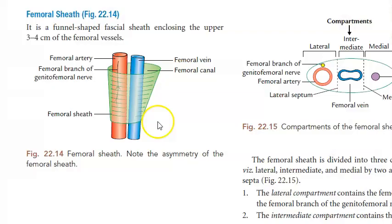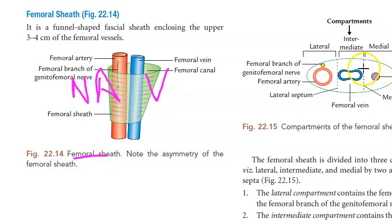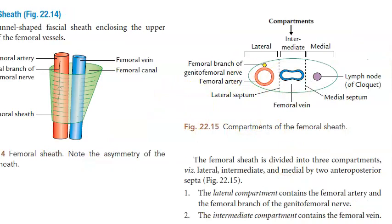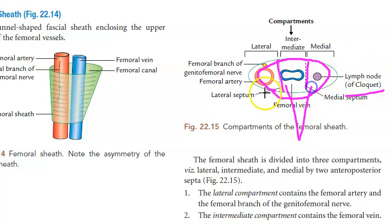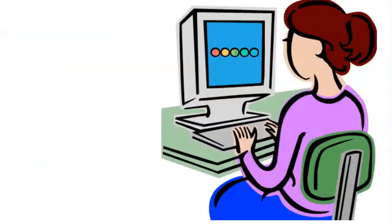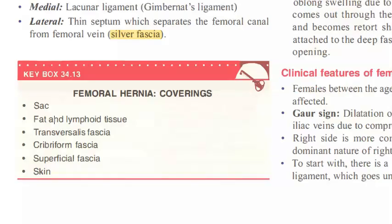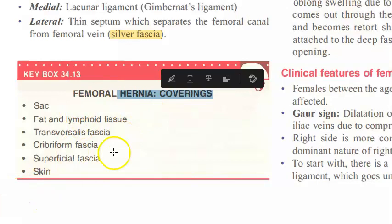The femoral sheath shows the compartments: there is a medial septum and a lateral septum. The sheath contains the femoral artery laterally, the femoral vein, and the lymph node of Cloquet in the femoral canal. The femoral branch of the genitofemoral nerve is also present.